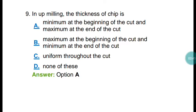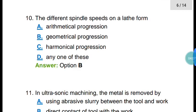Question number nine: in up milling, what is the thickness of the chip? The correct answer is option A — in up milling the thickness of the chip is minimum at the beginning of the cut and maximum at the end of the cut. In down milling it is maximum at the beginning and minimum at the end.